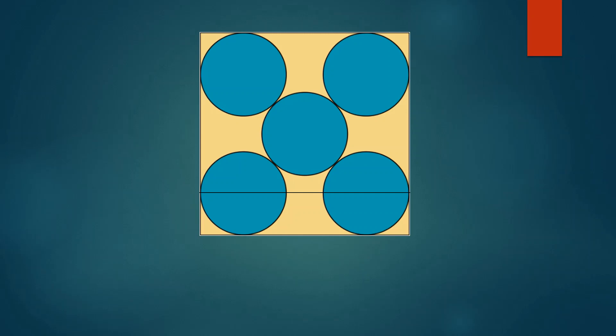Similarly, we join the centers of the two circles on the right side of your screen. Like before, this line is also perpendicular to the sides of the square.